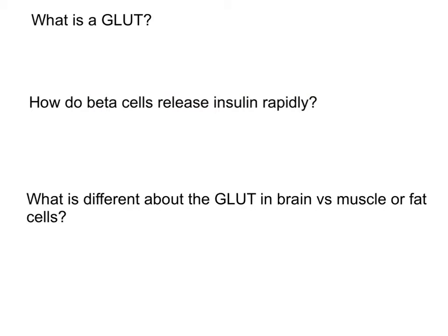There's a little quiz at the end of this. Pause the video, write down your answers, and then we'll run through them together. First question: what is a GLUT? Second question: how do beta cells in the islets of Langerhans release insulin rapidly? And last question: what is different about the GLUT in brain cells versus muscle or fat cells?